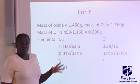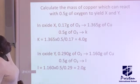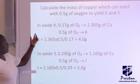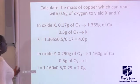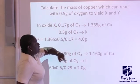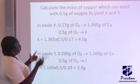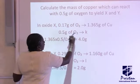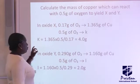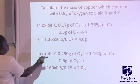So, the next question. We also calculate the mass of copper which can react with 0.5 grams of oxygen to yield X and Y. In Oxide X, from our question, we know that 0.170 grams of oxygen reacted with 1.365 grams of copper. So, you bring your 0.5 grams of oxygen here. Then, you make this the unknown. You cross multiply, make K the subject of the formula. After doing this, you have this to be 4.0 grams.